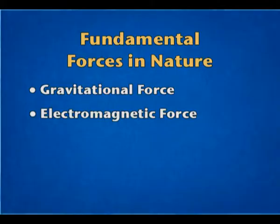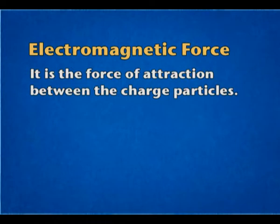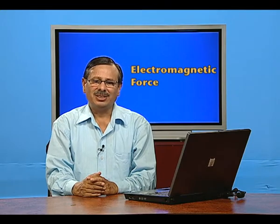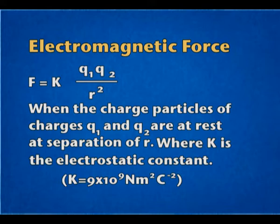We can talk about another force which is also equally important, that is the electromagnetic force. This is the force of attraction between charged particles and it also repels charged particles. If charged particles are like charged, then it is the force of repulsion. If charged particles are unlike, then it is the force of attraction. It can be expressed as directly proportional to the product of the charges and inversely proportional to the square of the distance. For equivalence we use the electrostatic constant k, whose value is 9 × 10⁹ Newton meter square per coulomb square, where coulomb is the unit of charge.